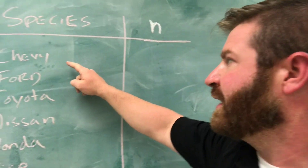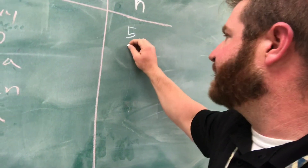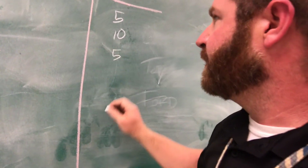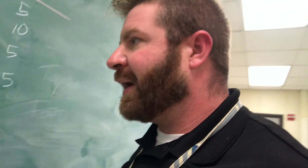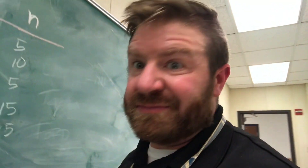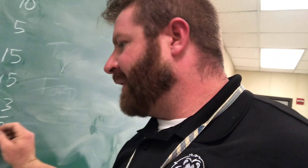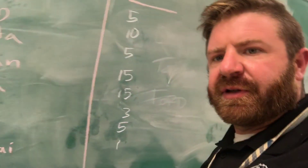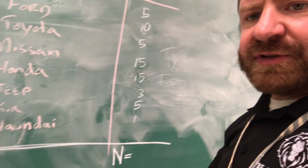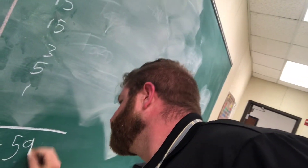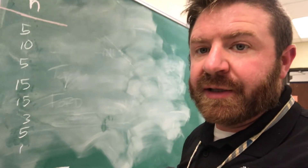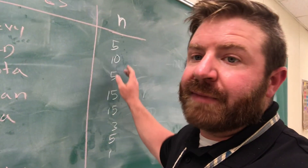So referencing the math I just showed: 5 Chevrolets, 10 Fords, 5 Toyotas. Let's give the others some numbers — maybe 15 Nissans, 15 Hondas, 3 Jeeps, 5 Kias, 1 Hyundai. Those are all my lowercase n's. I can add all those up at the bottom and that tells me my capital N. Adding them up: 5, 10, 5, 15, 15, 3, 5, 1 — capital N equals 59.